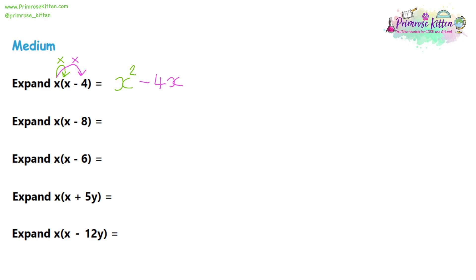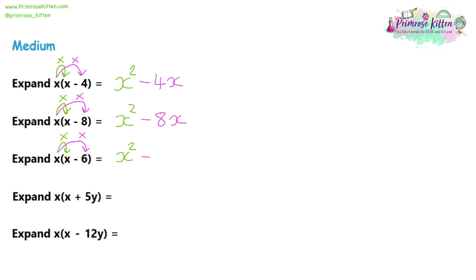Let's try question two: x(x − 8). Multiply x by x to get x squared, and x multiplied by negative 8 gives negative 8x. Then question three: same process — multiply the outside x by both numbers inside the bracket. x times x is x squared, and x multiplied by negative 6 gives negative 6x. I'm using arrows every time to keep track of what I've multiplied and to avoid missing any out.